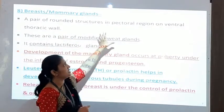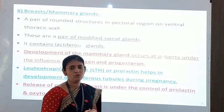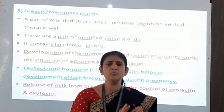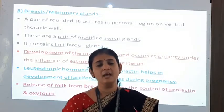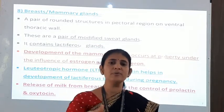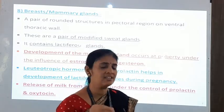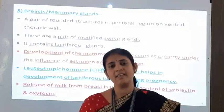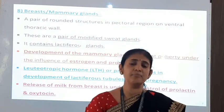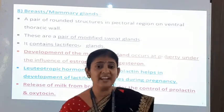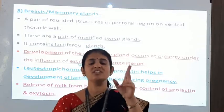Breasts are rounded structures in the pectoral region on the ventral thoracic wall. Mammary glands are present in both male and female, but in males there is no development, while in females there is development at puberty. In mammals, this special characteristic feature — development of mammary glands — is present, and these glands are located on the ventral thoracic wall in the pectoral region.